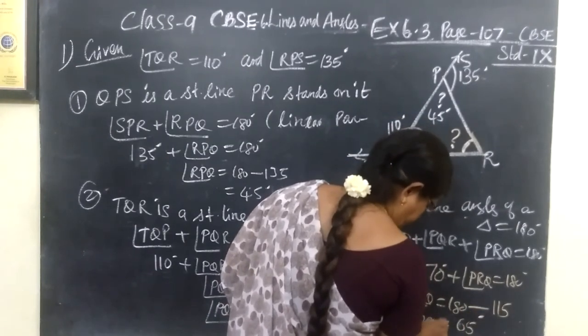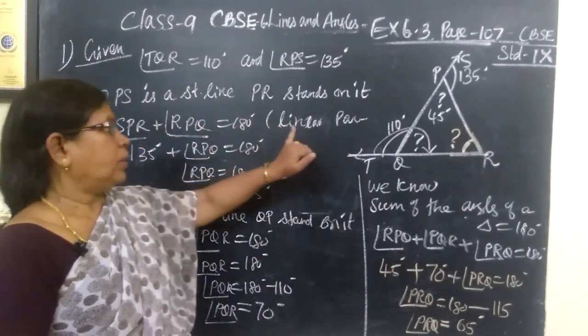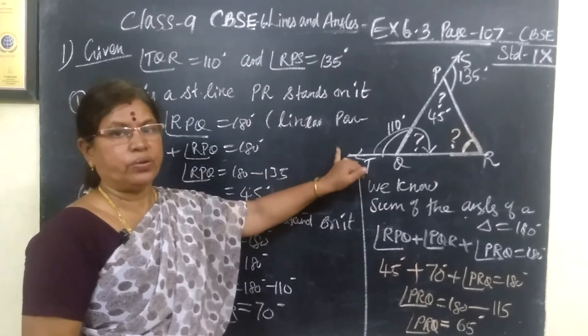So this is PRQ. In this sum, we can use the property linear pair. Mainly we use the linear pair.